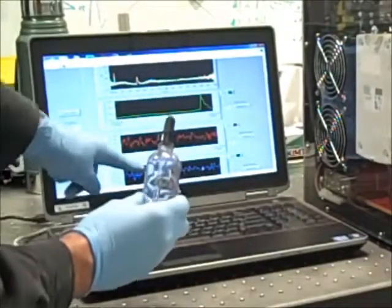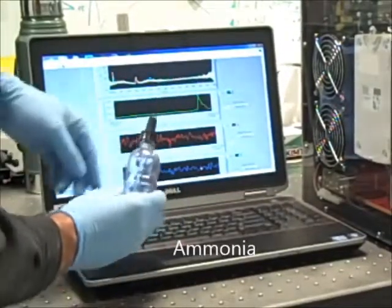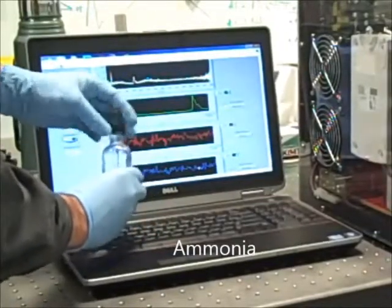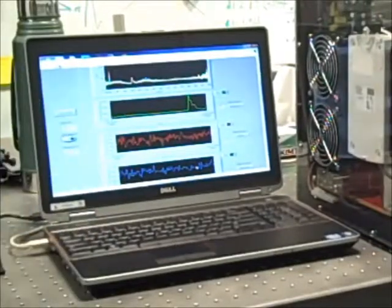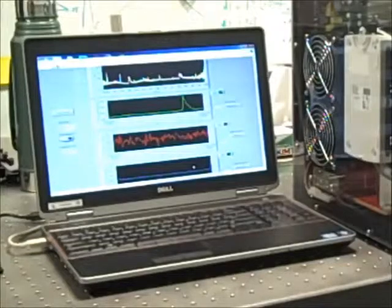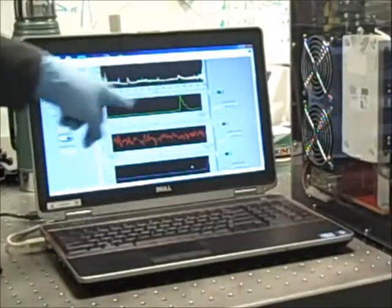Next, we have a bottle of ammonia, and the blue trace is displaying the real-time concentration of ammonia, which is currently at a relatively low level. Again, by cracking open the bottle, we release a small amount of vapor. Now the molecular fingerprint of ammonia is detected, and the measured concentration increases.